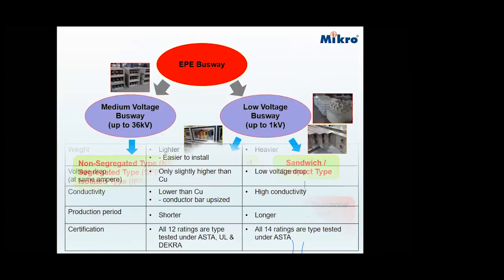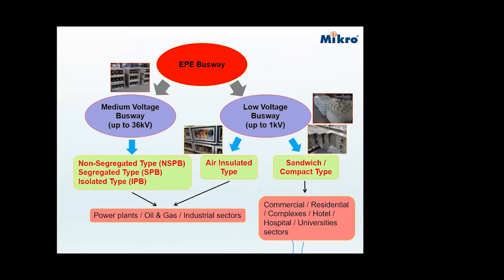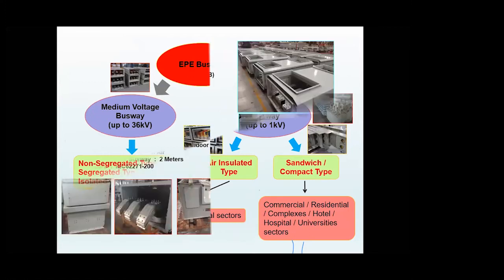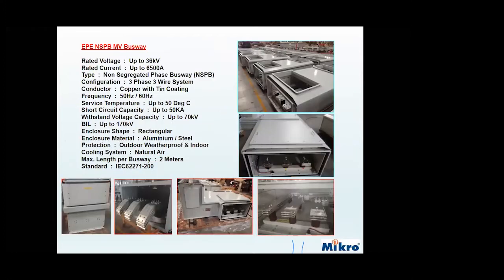EPE Busway manufactures two categories of busway: the low voltage busway, which is the constant sandwich type normally used in commercial buildings; and the medium voltage busway, up to 36 kV, which is the NSPB type normally used in power plants or oil and gas. The medium voltage busway is up to 36 kV and the rated current is up to 6,500 amps.